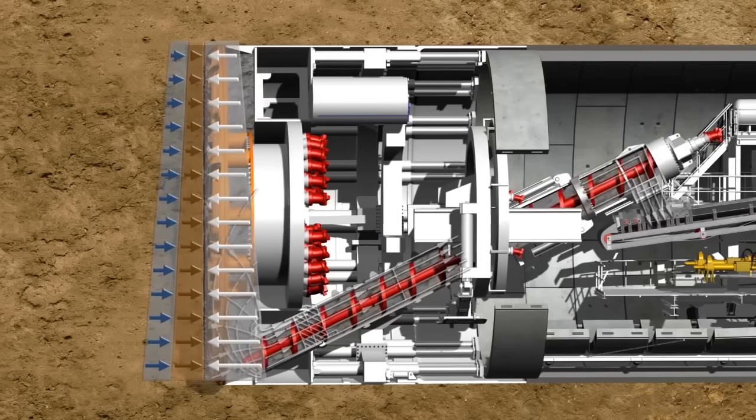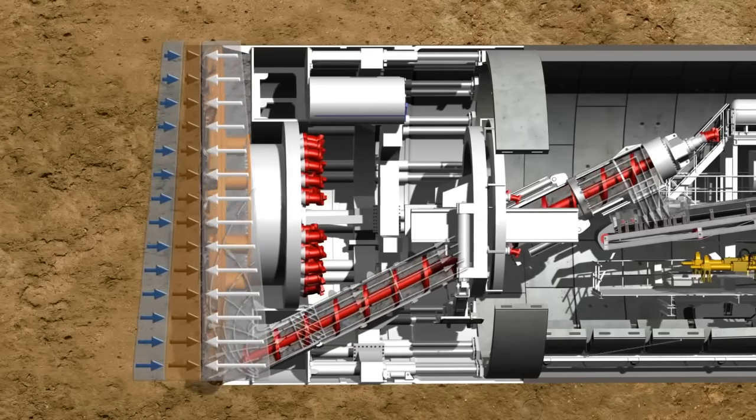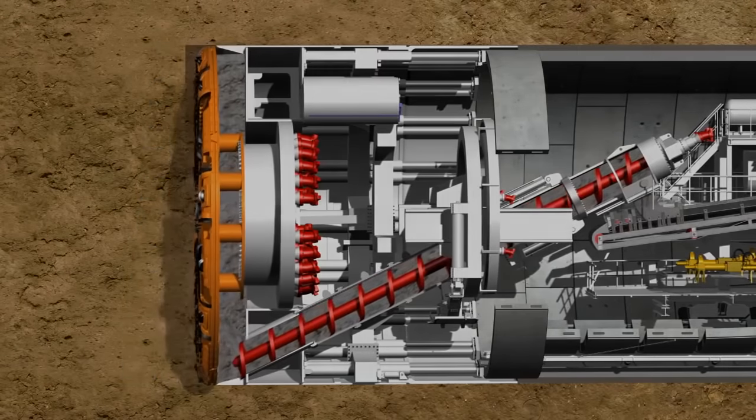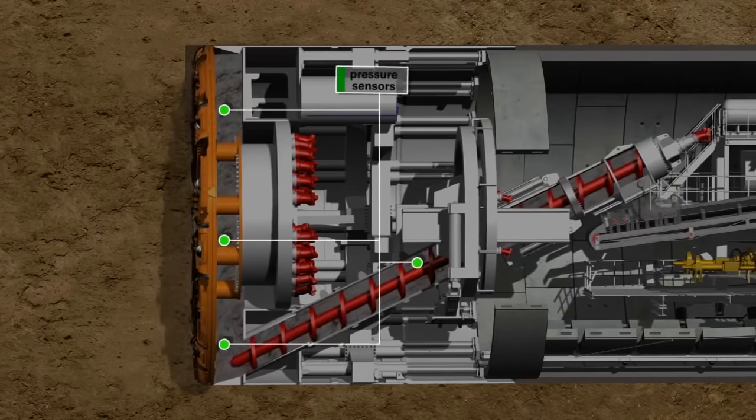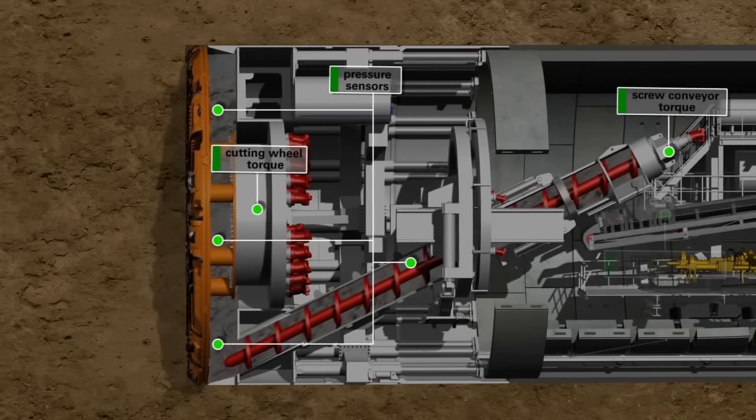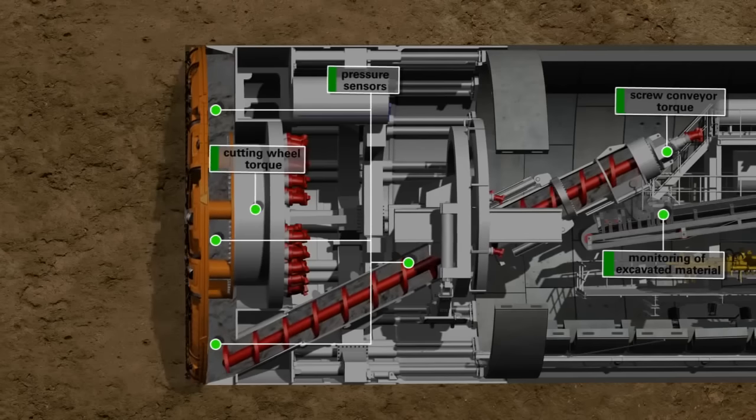The system must be able to react flexibly to the permanently changing geological conditions. Therefore, the current state is continuously controlled with the help of pressure sensors, by measuring the cutting wheel torque and the screw conveyor torque, and by monitoring the excavated material.